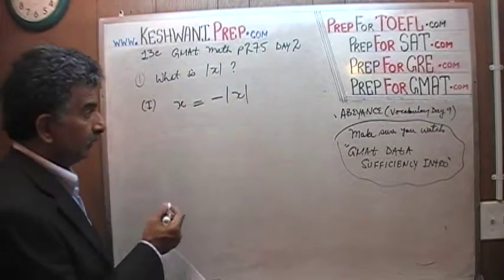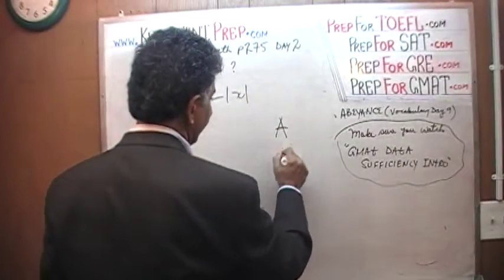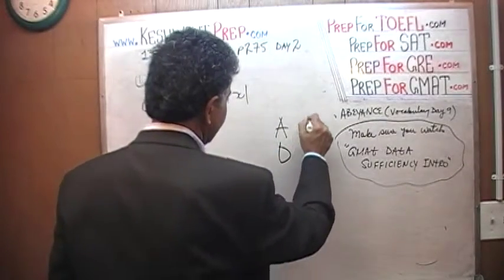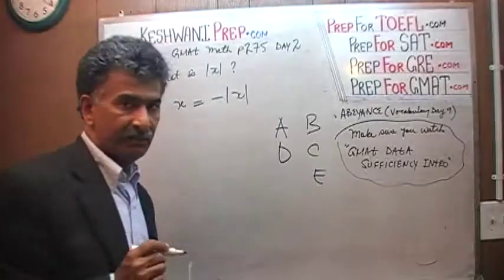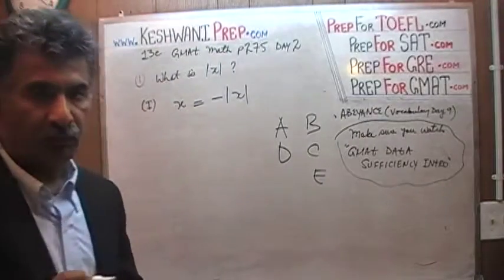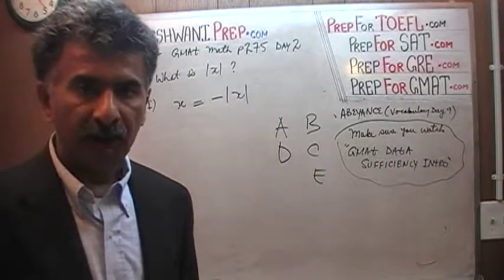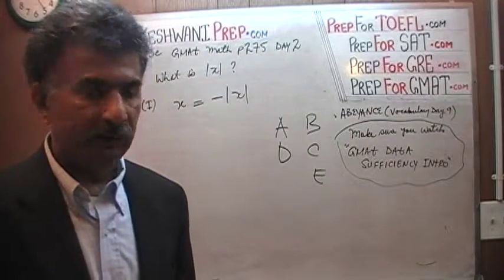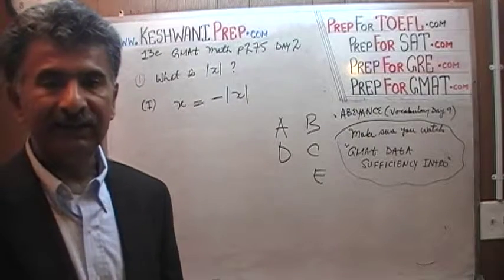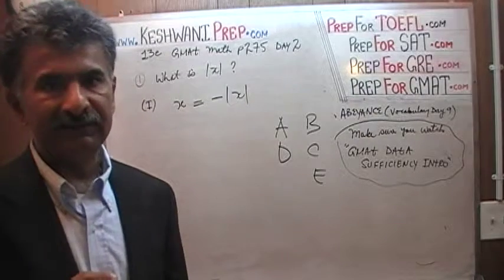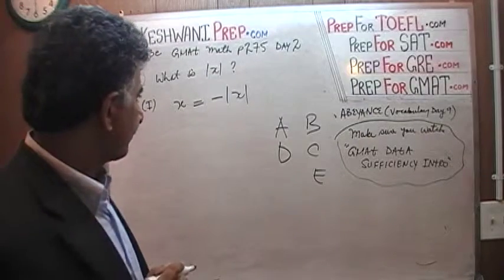Before we do anything at all, this is what we do. We write down A, D, B, C, E. Always, as soon as the data sufficiency question pops on the screen, you must write down A, D, B, C, E.